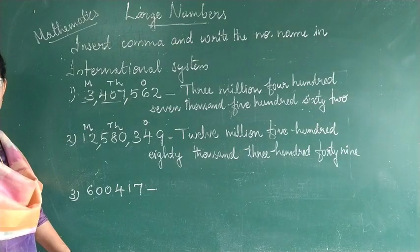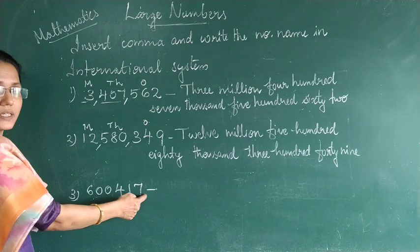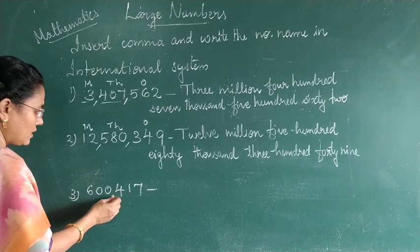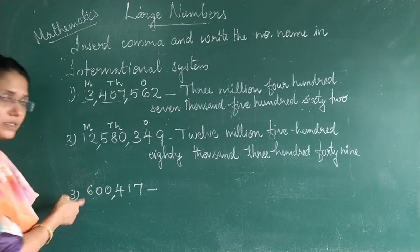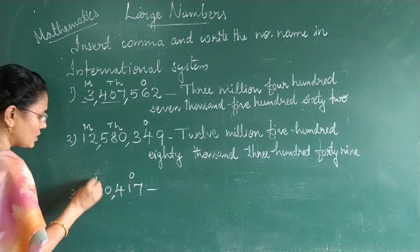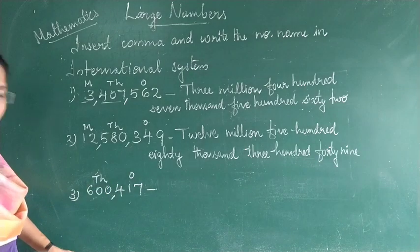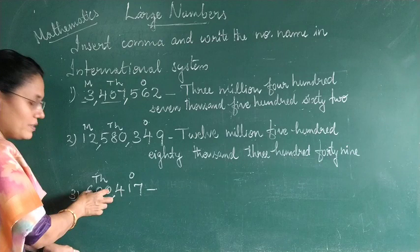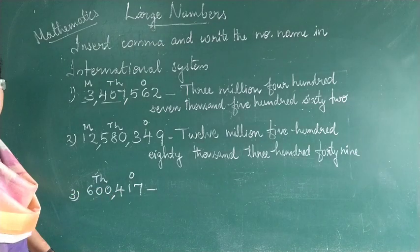The last question has only six digits. As usual, count three digits from right to left and insert a comma. The first group is the ones period and the second group is the thousands period. The number is 600,417.